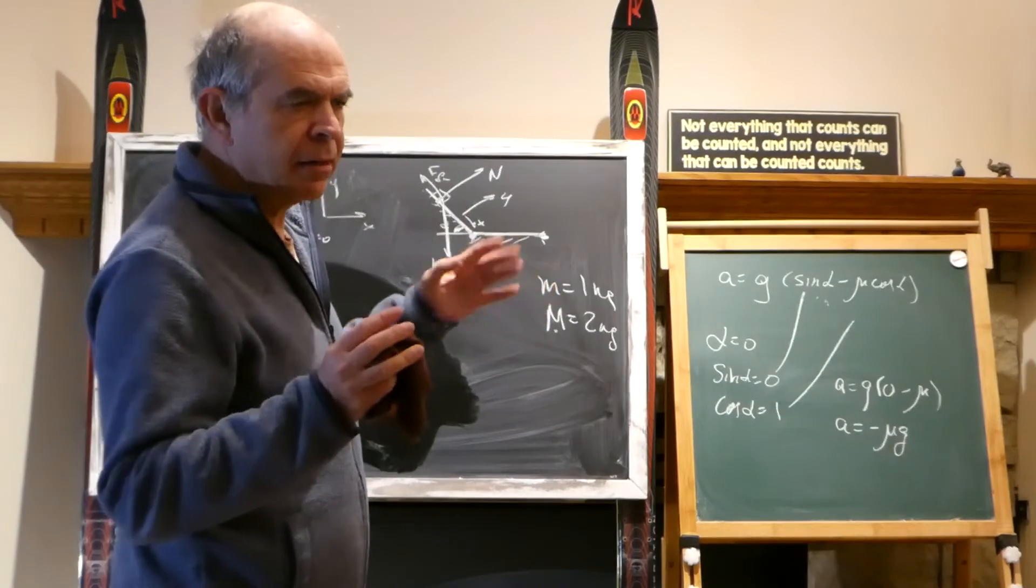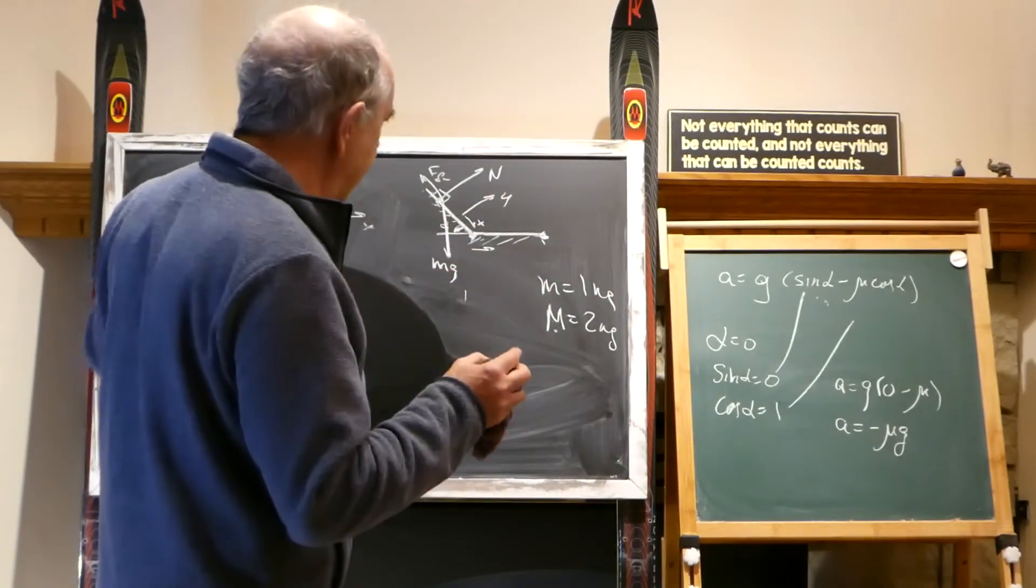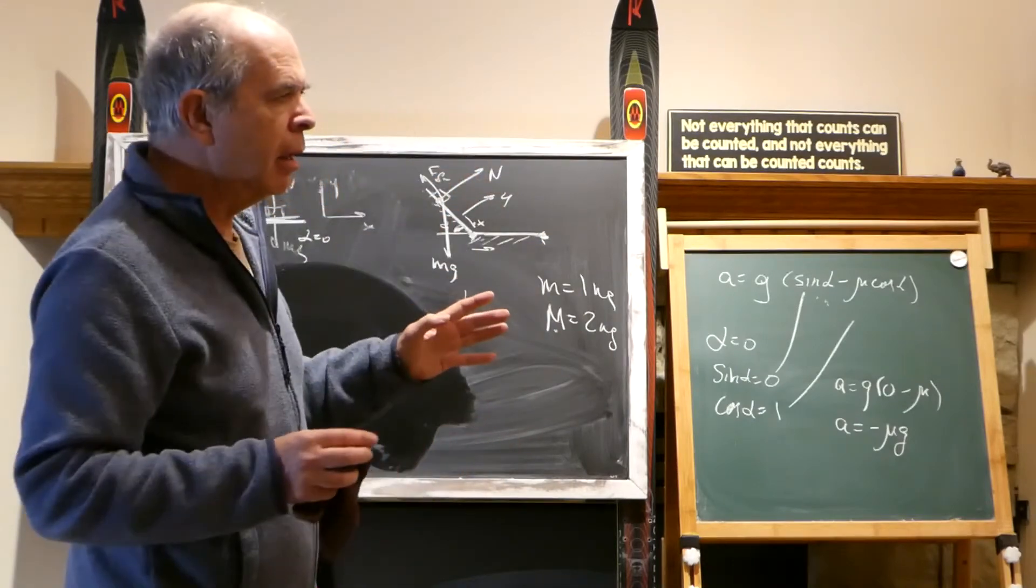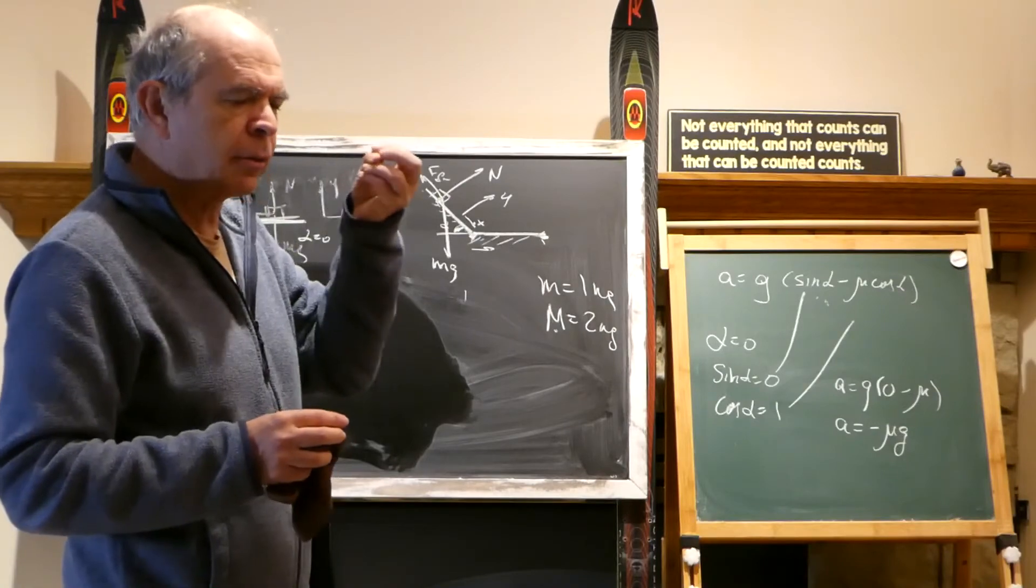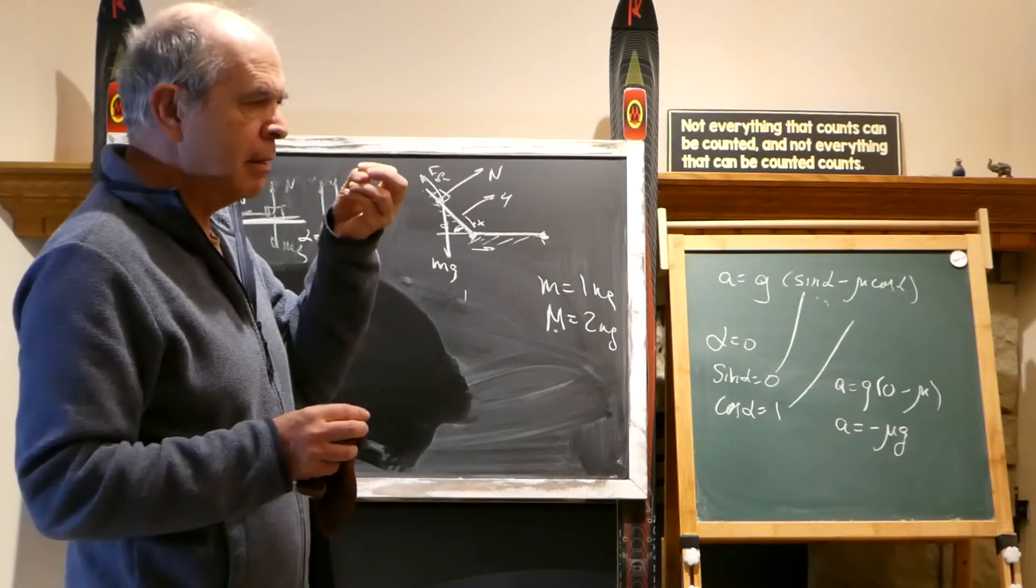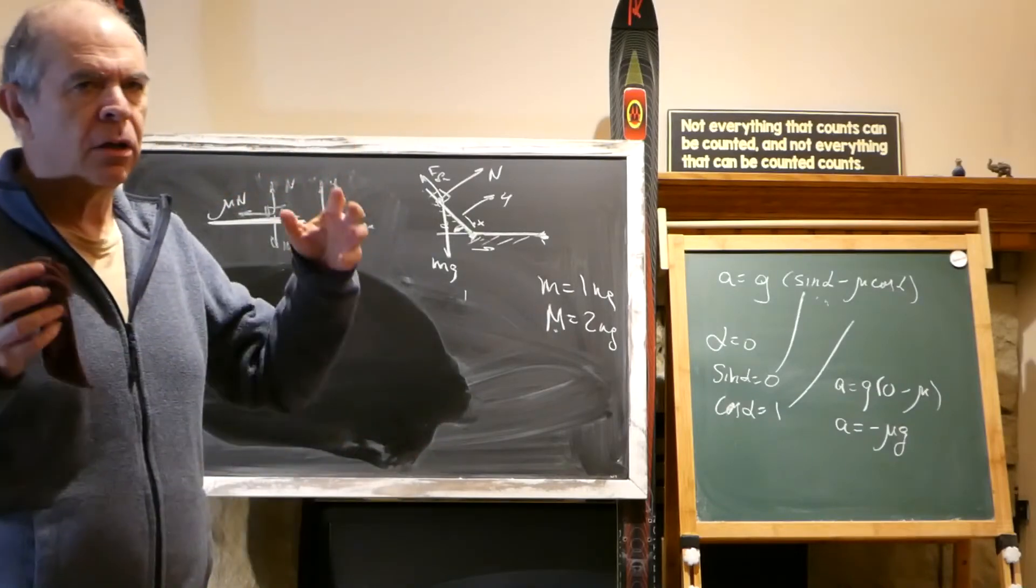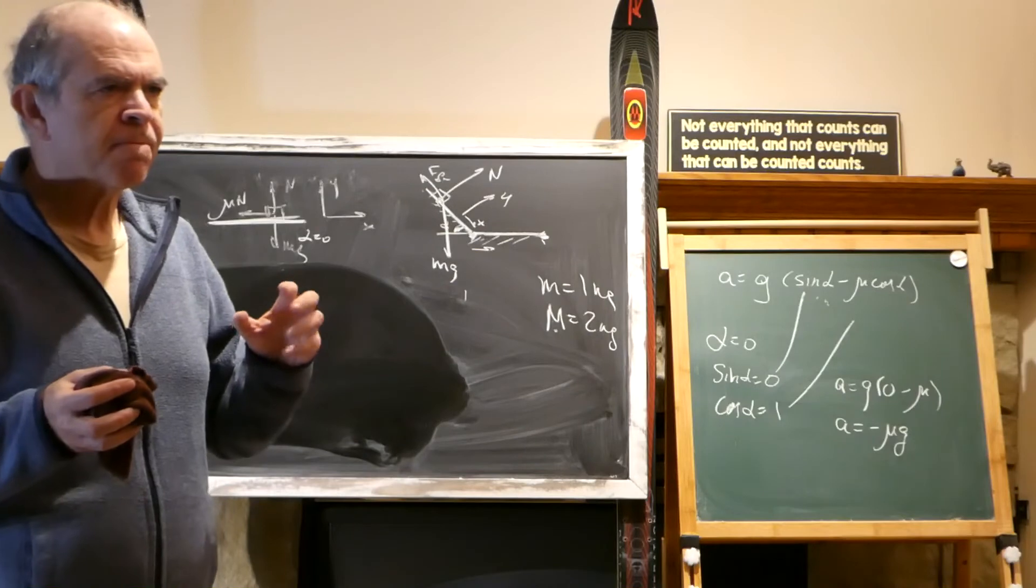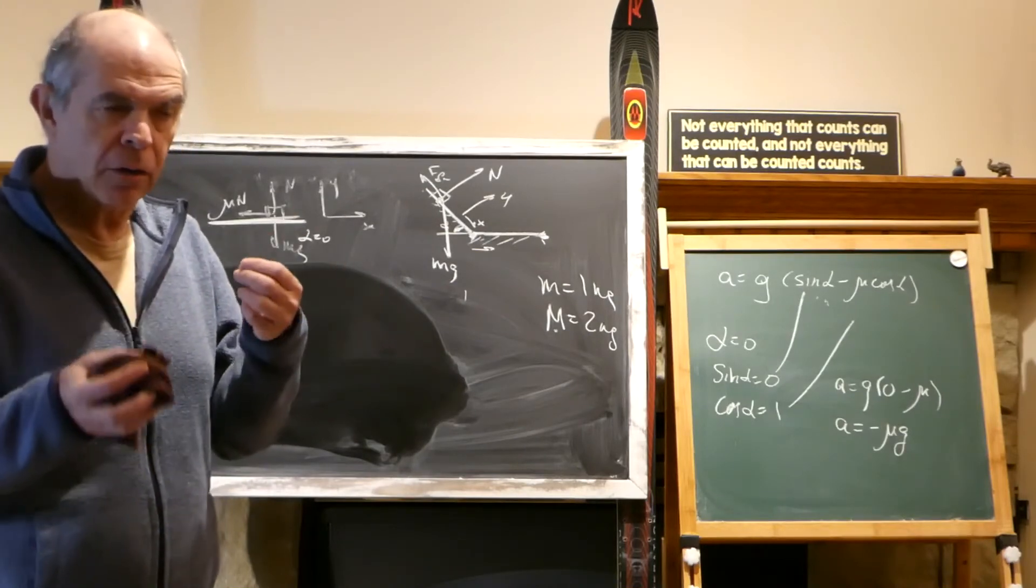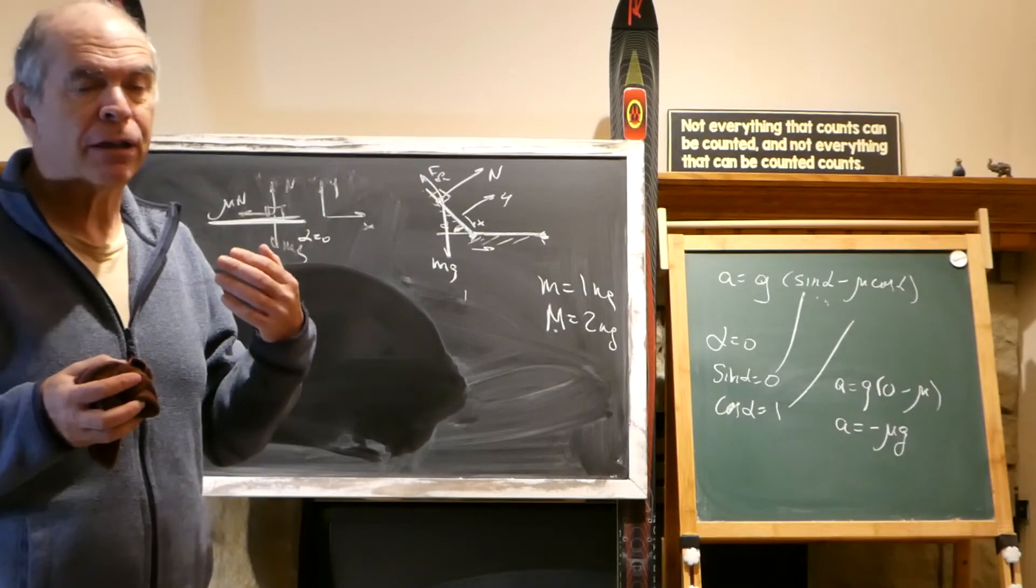sum of all vectors equal MA, F friction mu N, N equal MG cosine alpha, we found all of this X, Y, and then we obtained acceleration, acceleration, and then we start looking with acceleration, because in the end of the day, the whole goal of mechanics is to calculate all forces, we know all forces, and then we figure out what the acceleration is,